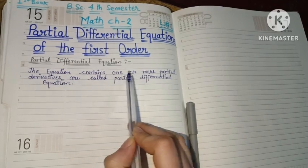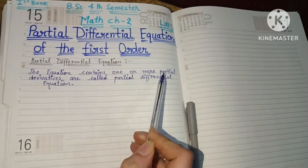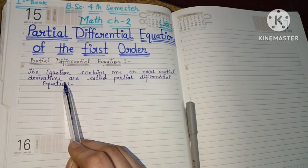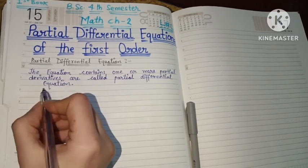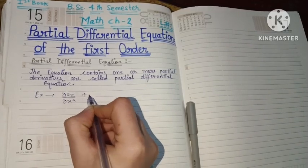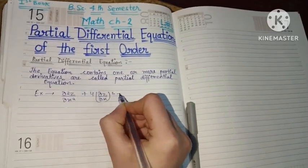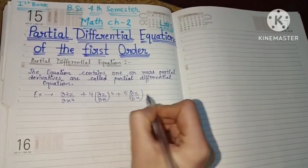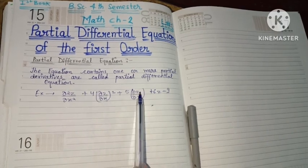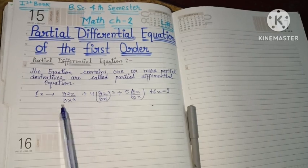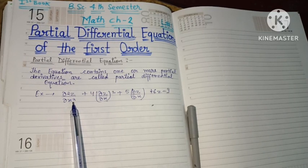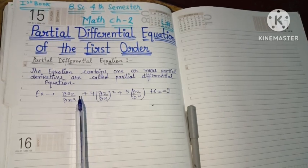Partial derivatives mean differentiation of any variable only with respect to that same variable — no differentiation with respect to any other variable. For example, take the equation: del²z/del x² + 4(del z/del x)² + 5(del z/del x) + 6z = 9. Here, z is being differentiated with respect to x, so this is partial differentiation. del z/del x is the partial derivative — differentiation with respect to only one variable.